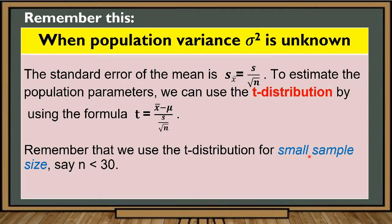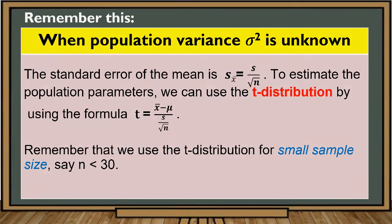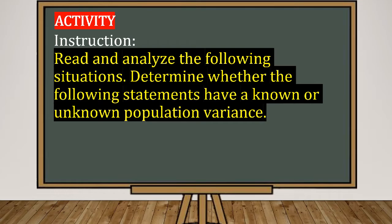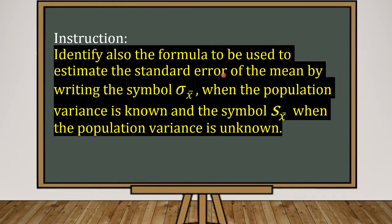Remember that we use the t distribution for small sample size where n is less than 30. Now we will try to identify in the following situations whether the population variance is known or unknown. We will also identify the formula to be used to estimate the standard error of the mean — using this symbol when the population variance is known and this symbol when the population variance is unknown.